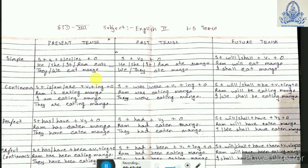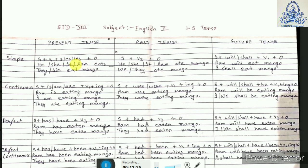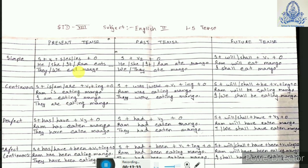For plural subjects — for example, 'they eat mango' — here 'they' is plural and so we don't have to add S, ES, or IES. Same way, 'we eat mango' — there is no need to add S, ES, or IES. It is added only when the subject is singular. For plural subjects we don't require S, ES, or IES.